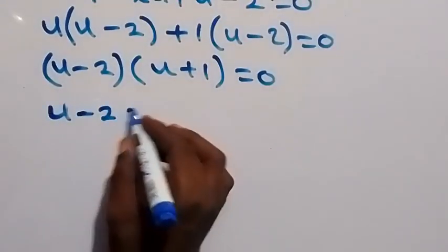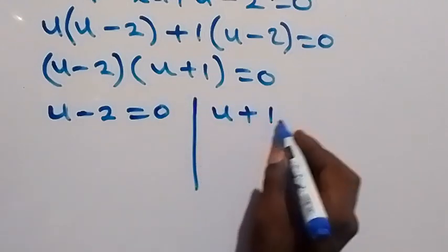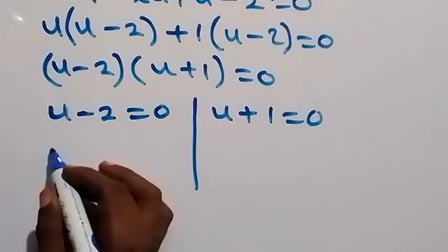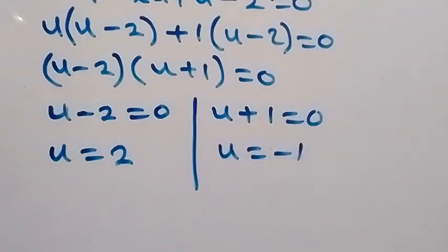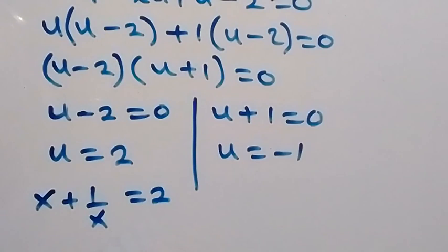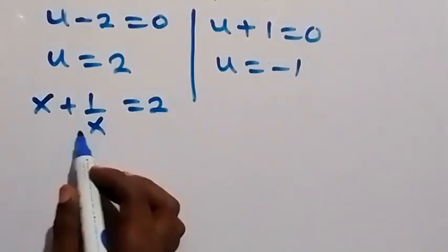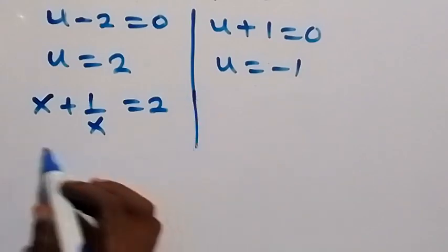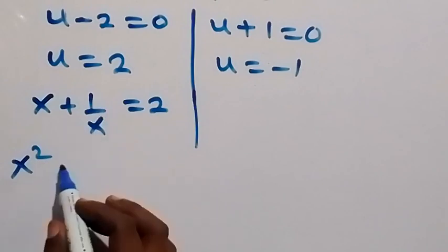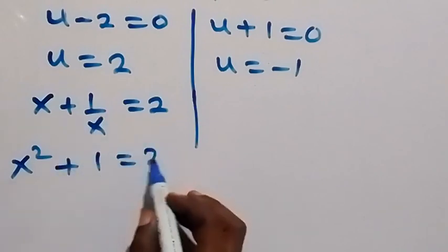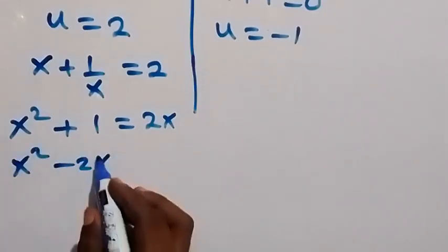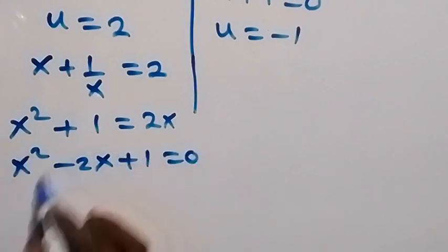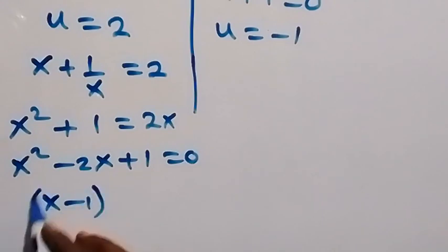We have two cases: u minus 2 equals to 0, or u plus 1 equals to 0, giving u equals 2 or u equals minus 1. Recalling that u equals x plus 1 over x, for the case u equals 2: multiplying through by x gives x squared plus 1 equals 2x, so x squared minus 2x plus 1 equals to 0.